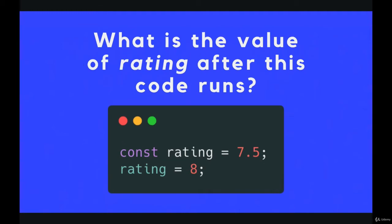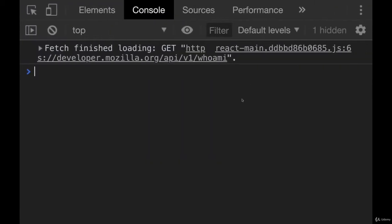The next one. What is the value of rating after this code runs? This one's a little trickier because we're using const. So rating is set to 7.5. And remember, that means that rating will not and cannot change.